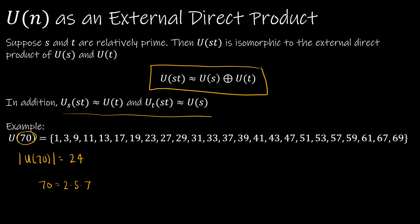So according to this theorem that we're looking at, U(70) is going to be isomorphic to the external direct product of U(2), external direct product with U(5), external direct product with U(7). So that is, in fact, isomorphic.